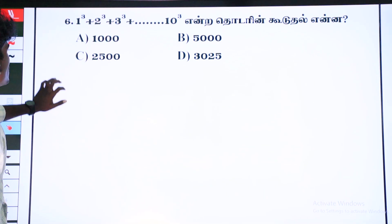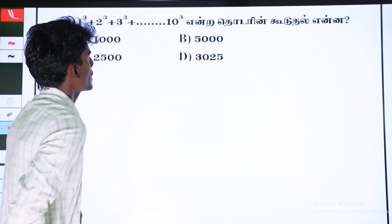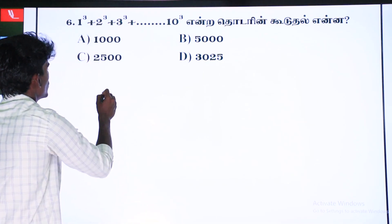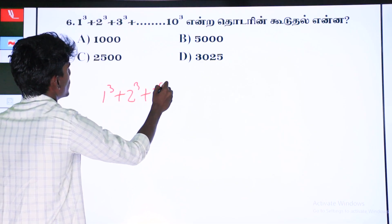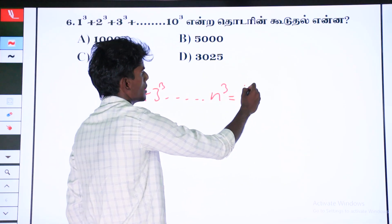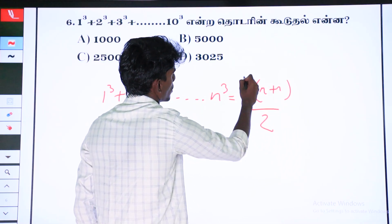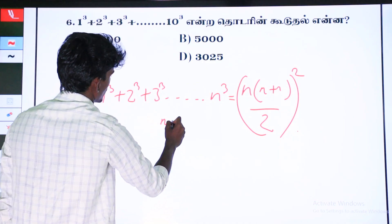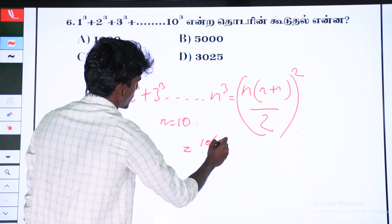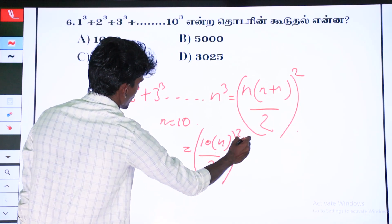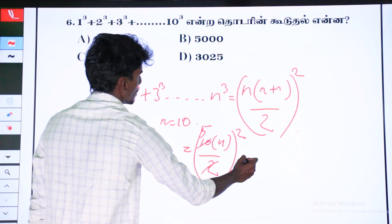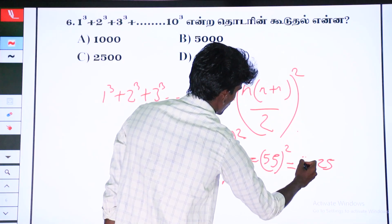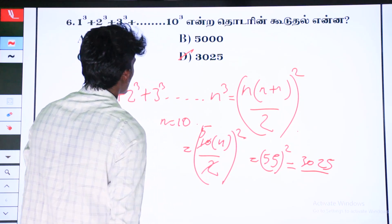Next question: 1 cube plus 2 cube plus 3 cube is equal to n cube, and the total is equal to n. This is the formula: 1 cube plus 2 cube plus 3 cube is equal to n cube. The formula is n into n plus 1 by 2 whole square. I see that n is equal to 10. 10 is equal to 10 by 2 whole square. 10 to 2 is equal to 5. 5 square is 25. Option D is the answer.